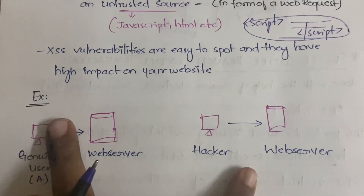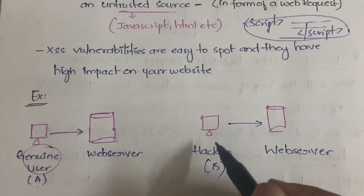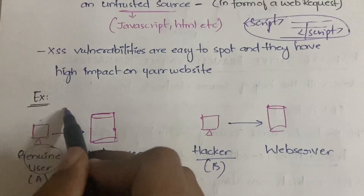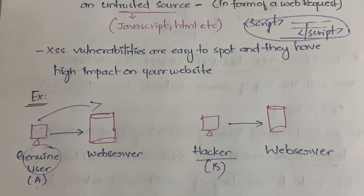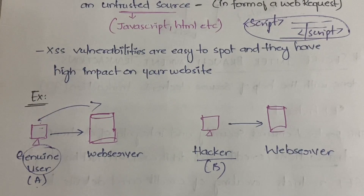Here we have two users — User A and User B. User A is a genuine user but User B is a hacker. User A will get access to the web server normally — he'll read the contents, click on modules, buy or sell — whatever the web server is intended for, the genuine user will do.